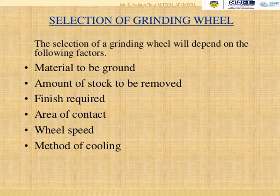Selection of a grinding wheel is based on six criteria: material to be ground, amount of stock to be removed, desired finish, area of contact, wheel speed, and method of cooling.